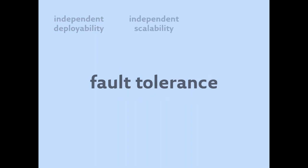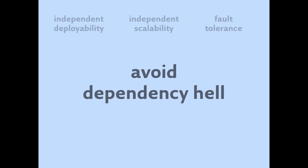Fault tolerance. If you imagine a recommendation engine team ships a bug and crashes their process, we as consumers of the entire application might still be able to see the full product catalog and make purchases if we don't consume that recommendation engine's feature — if we're consuming it over the network rather than in-process. A fault can crash a process, versus being able to have a timeout or any number of other fault tolerance patterns from a remote process.